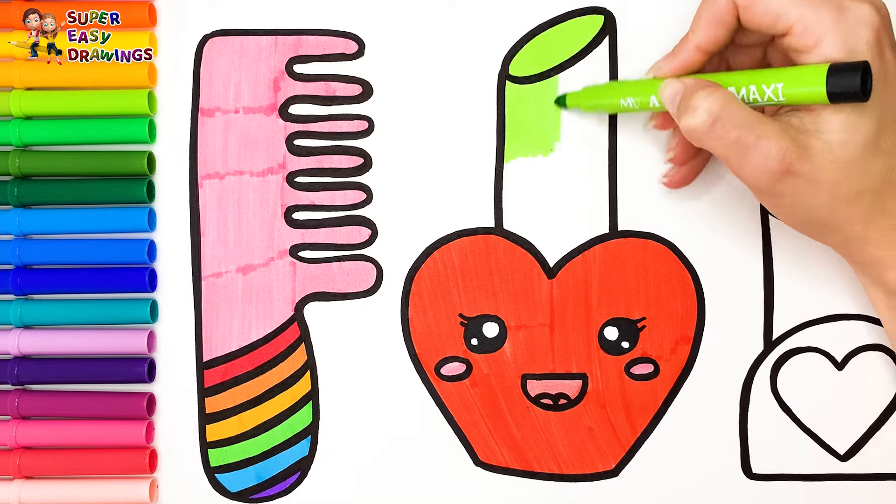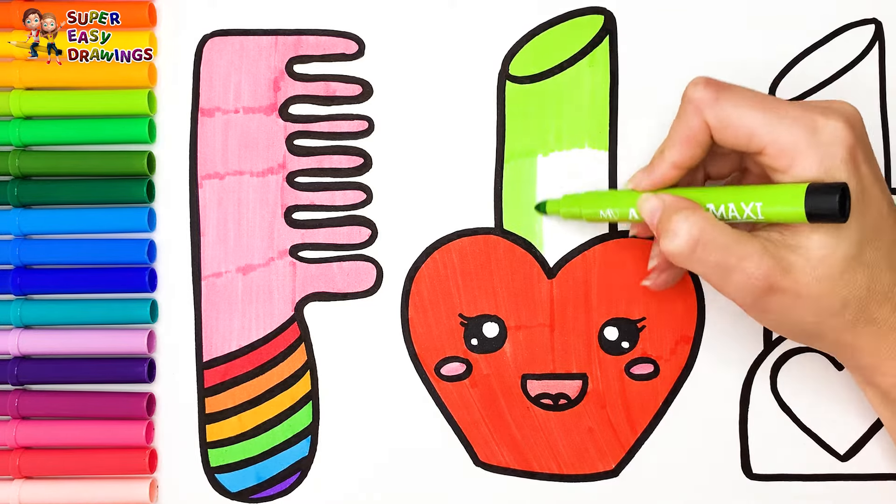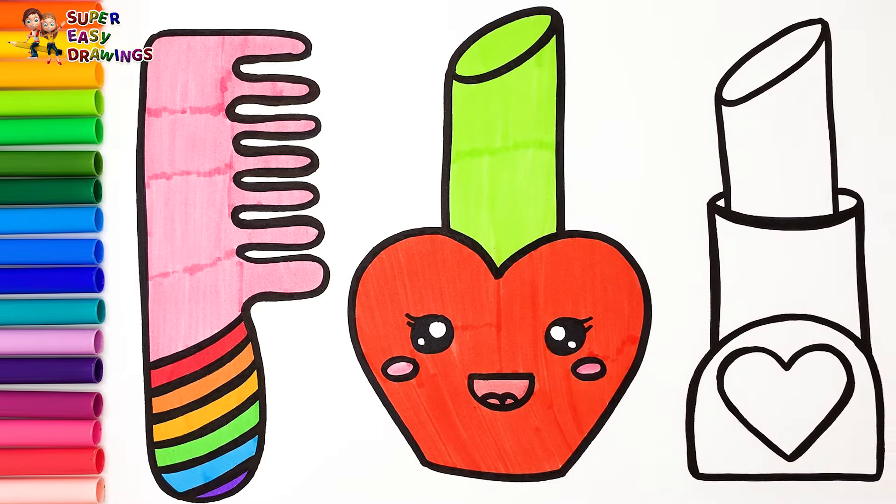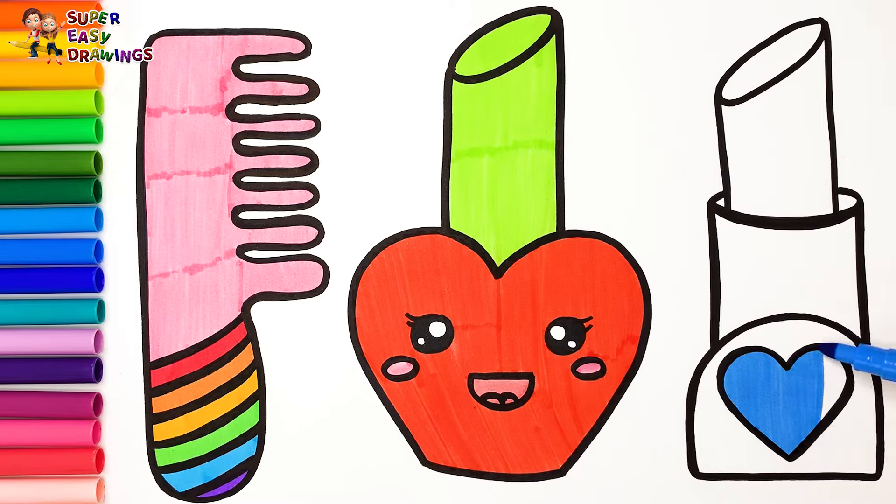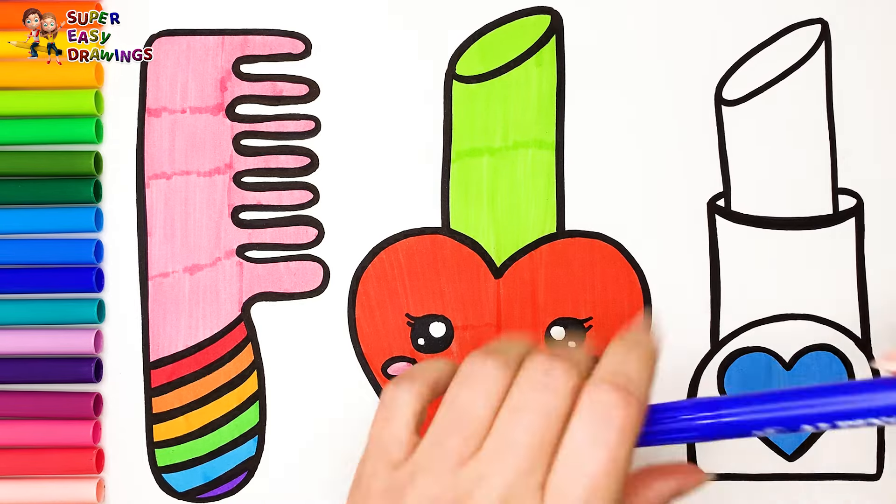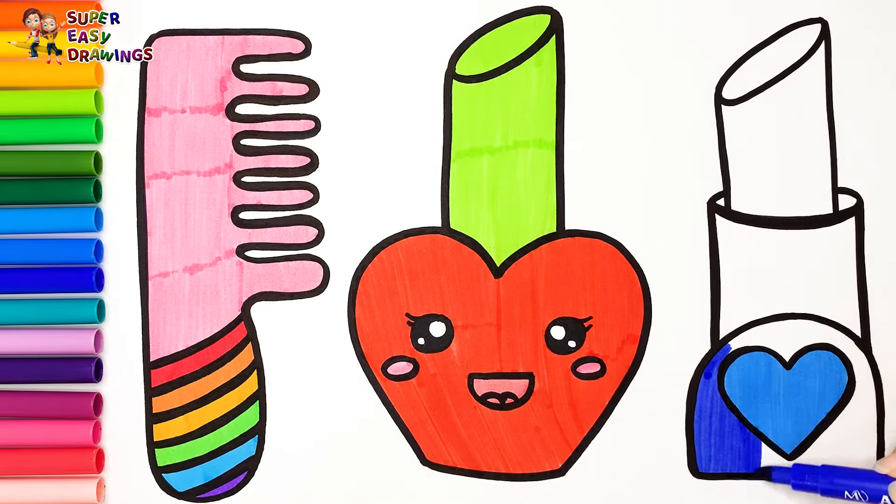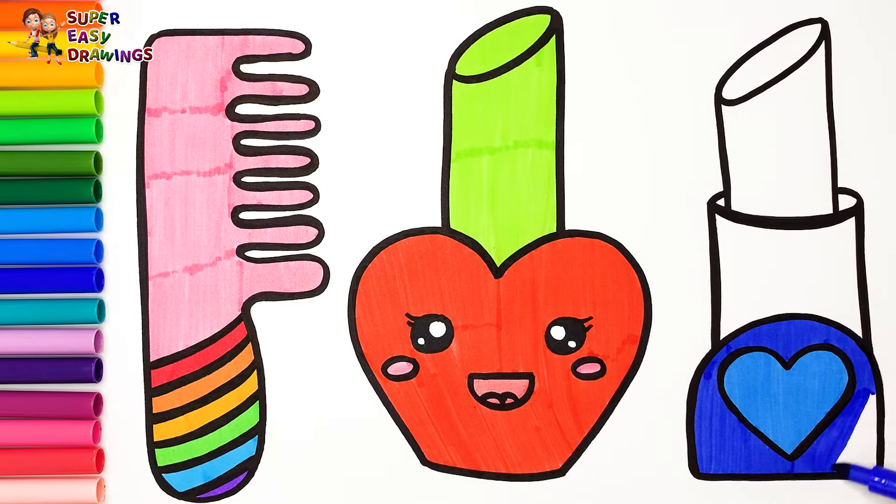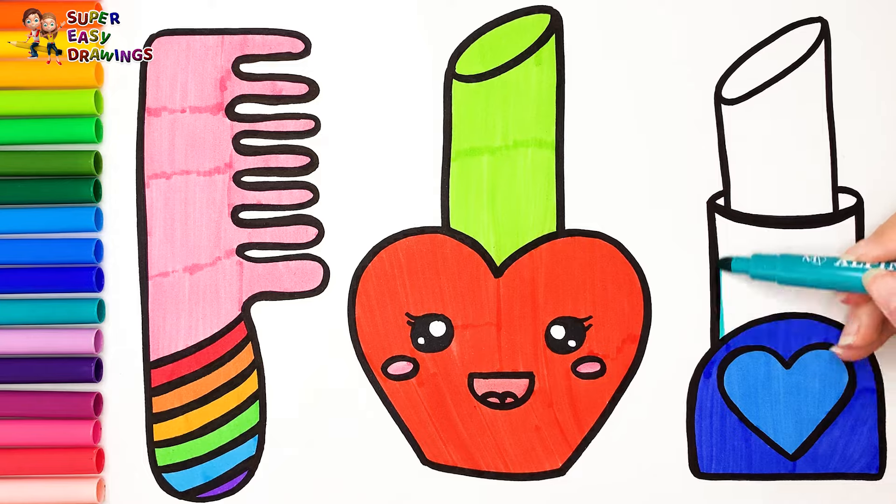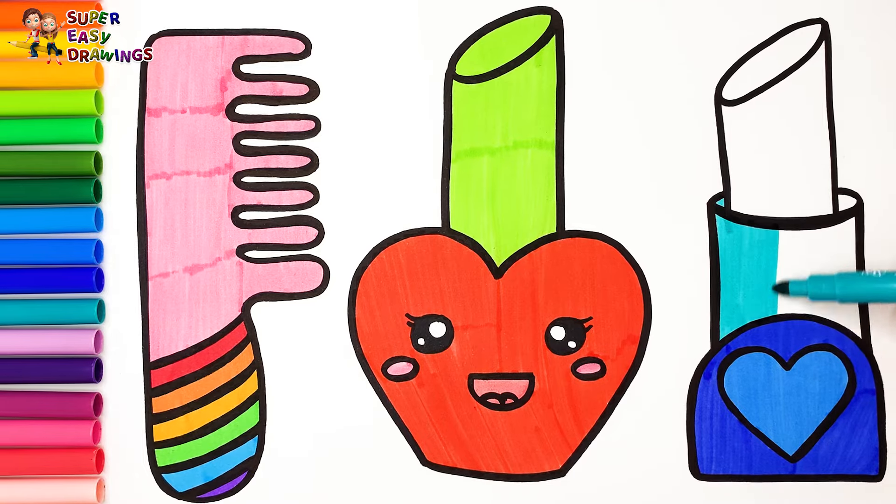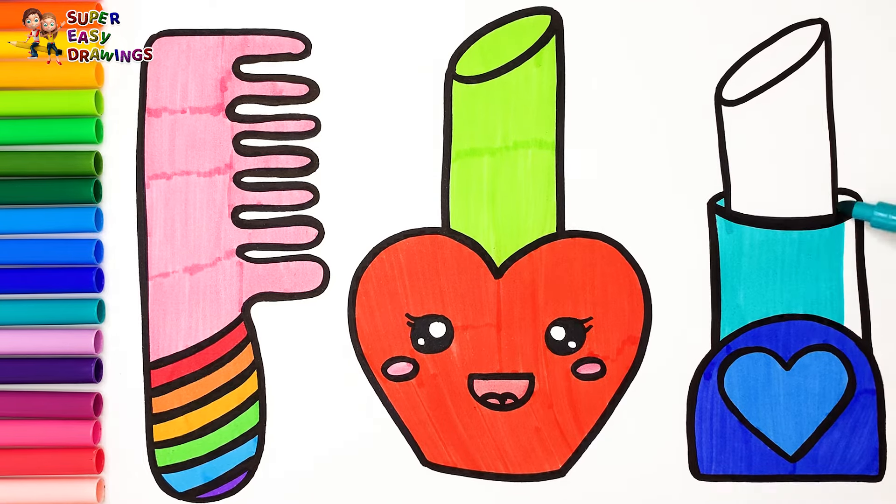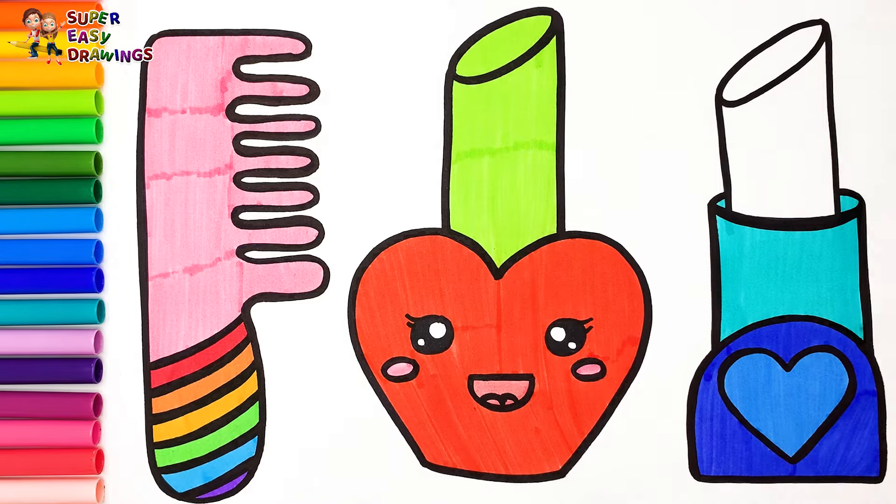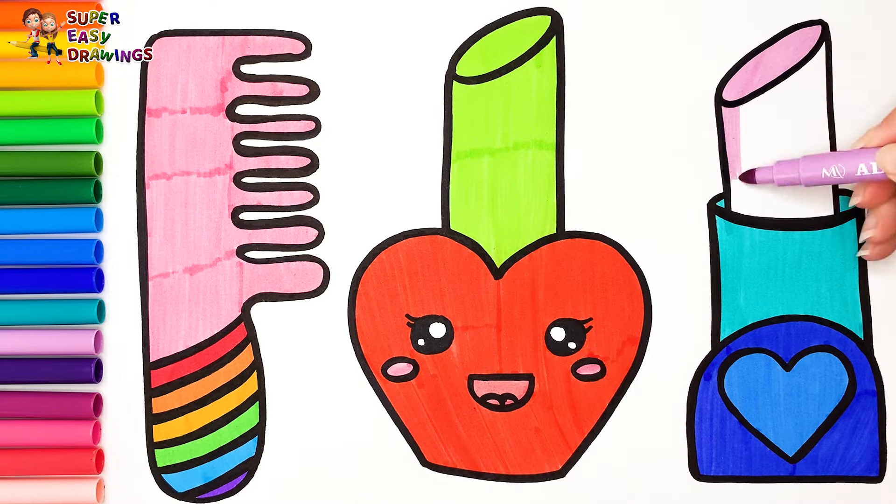Light green for the heart on the lipstick. I use blue, then I color this part around it dark blue. I use aqua blue in the middle, and finally I color the lipstick light purple.